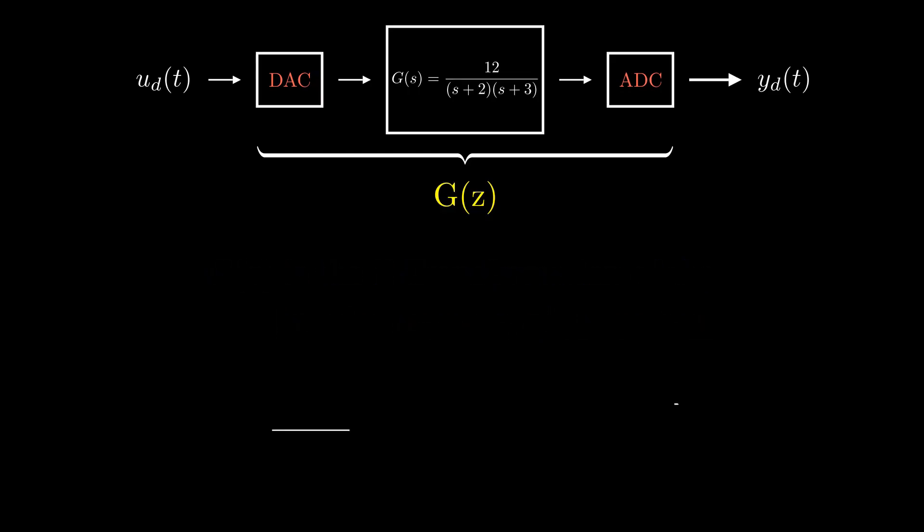In order to find G(z), we set an impulse function for u_d(t). It will be fed into the digital to analog converter, resulting in the curve corresponding to u(t) minus u(t minus T), where u(t) is the step function.